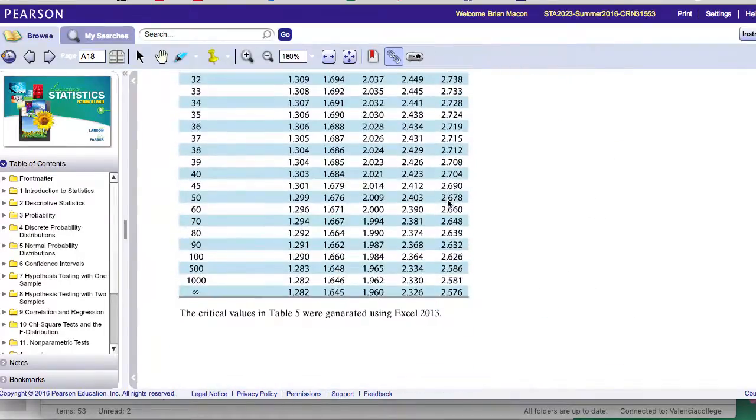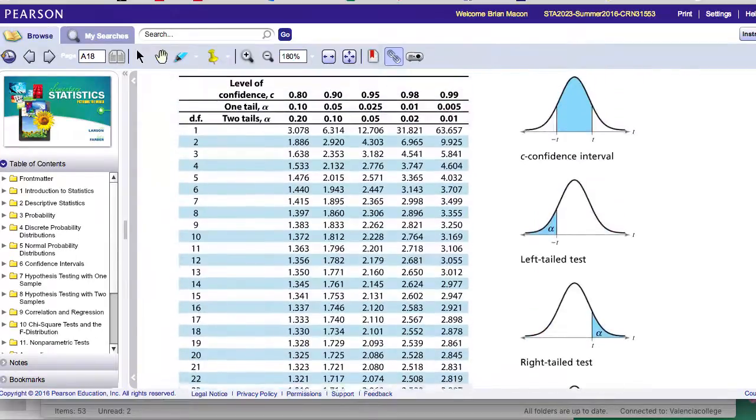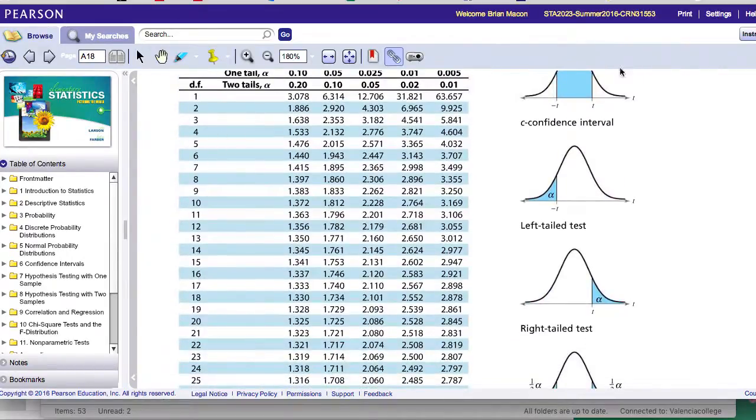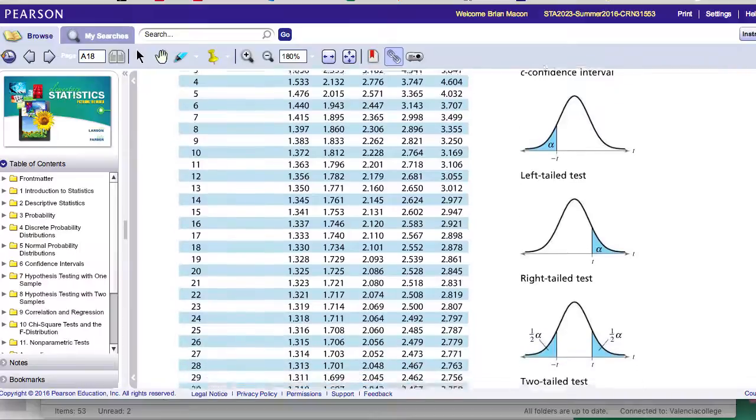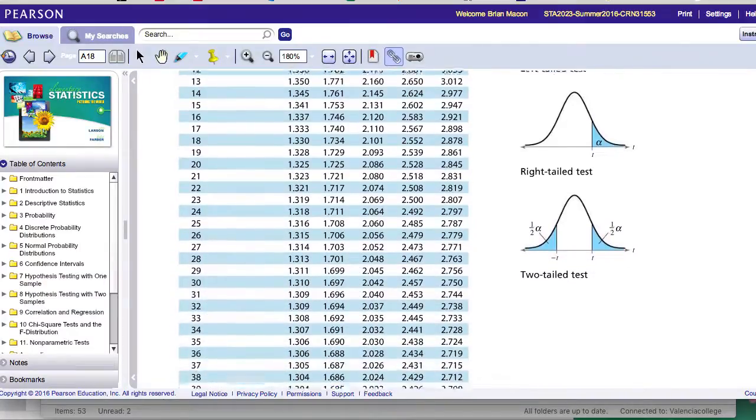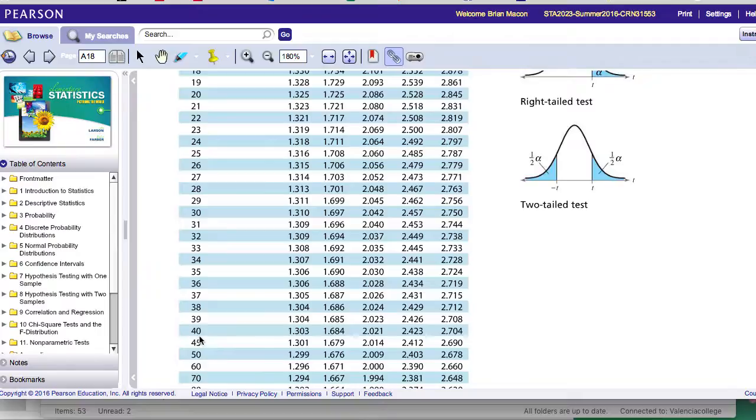So if you look at this t-table, and the scrolling's going real quick there, I apologize. If you look at the degrees of freedom, we go all the way up to, I think it's, what is it, 35, goes up to 40.